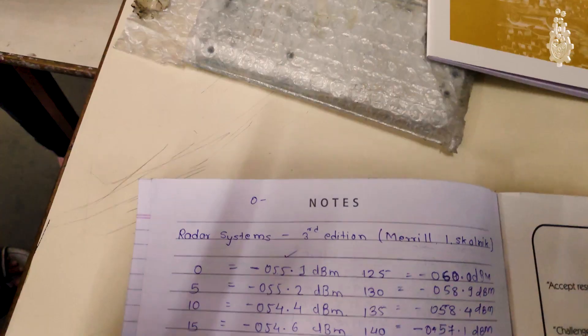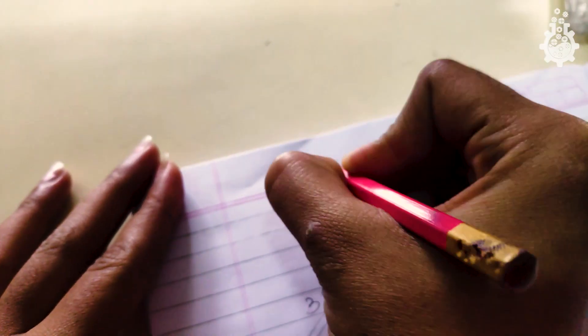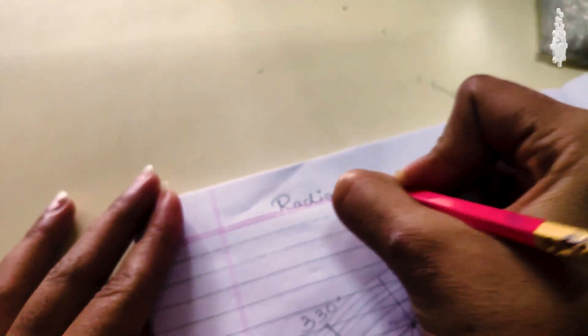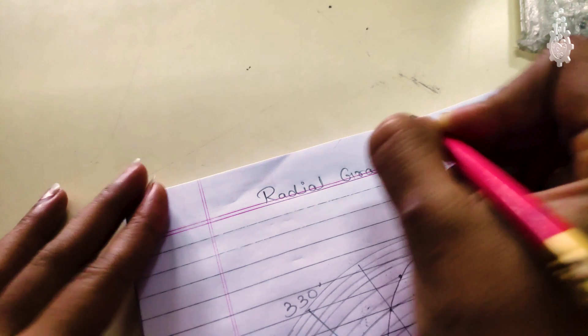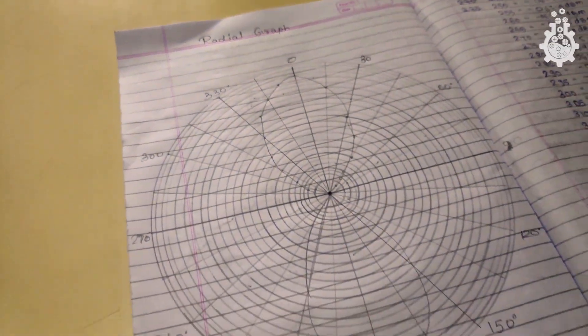Once we have noted down all the readings, we have to plot them on a radial graph, and the diagram that we see is the radiation pattern of our antenna. Sounds easy, right?